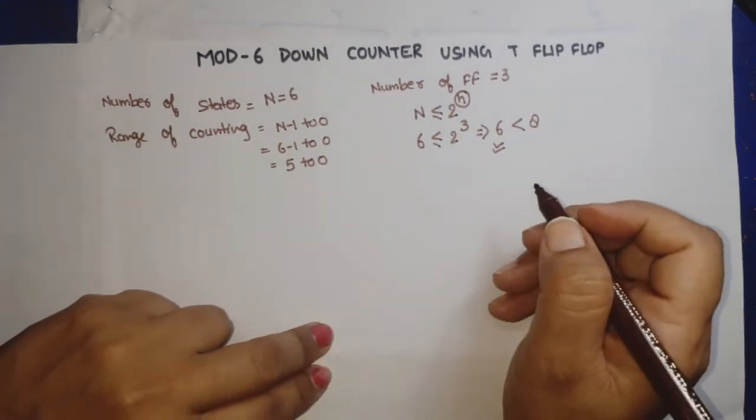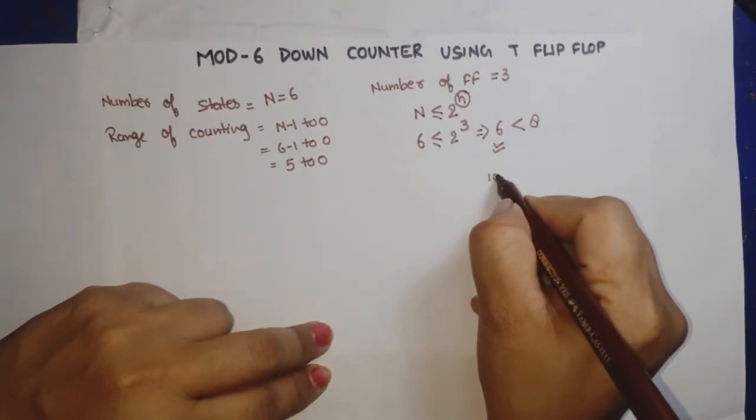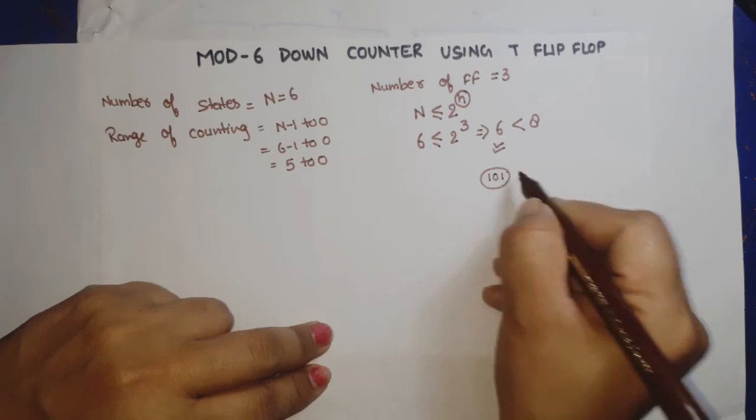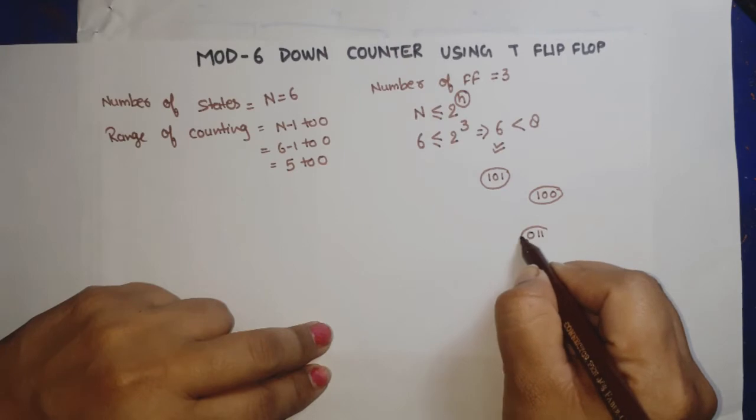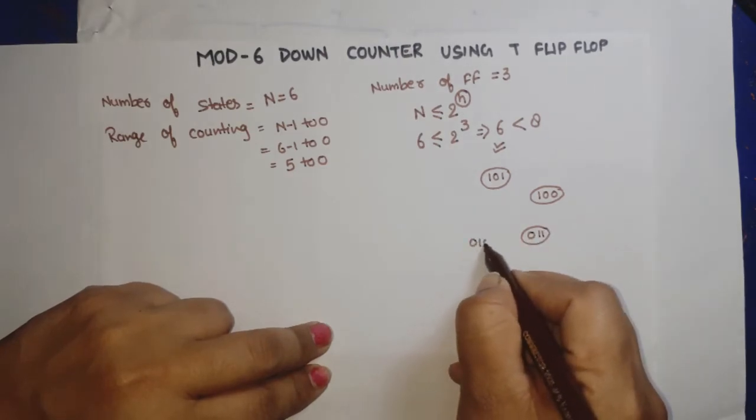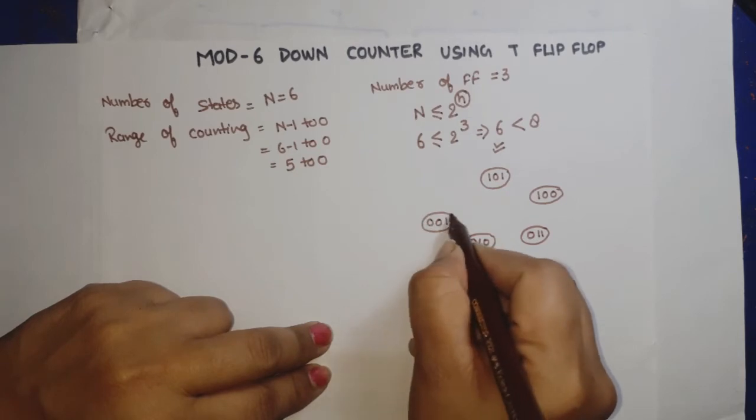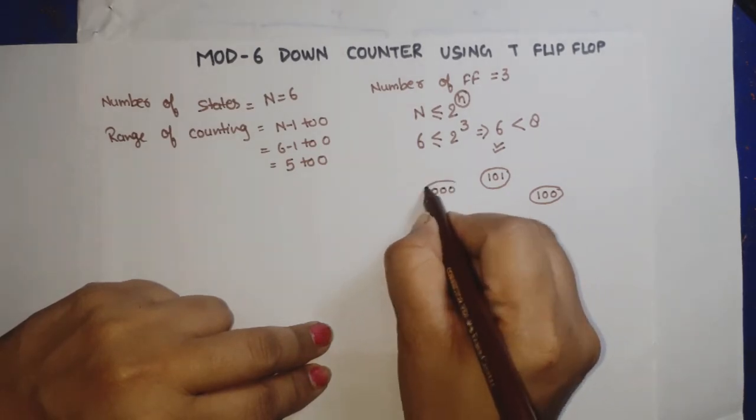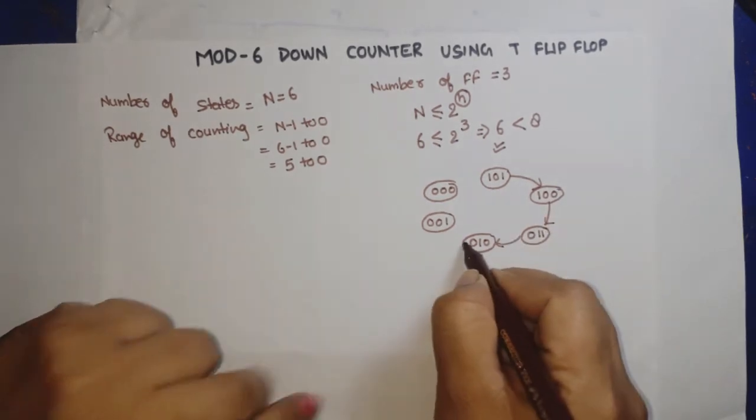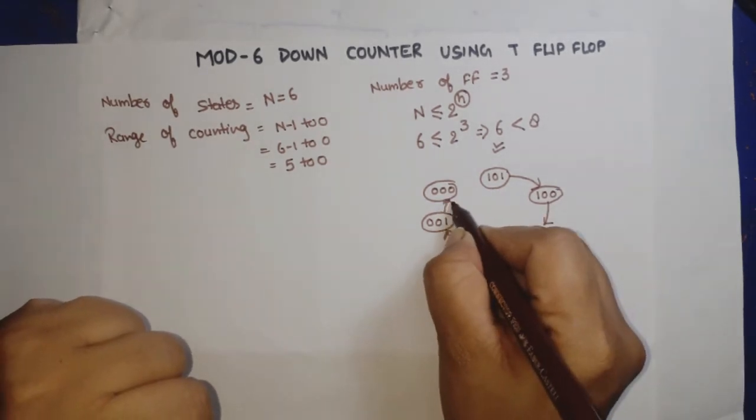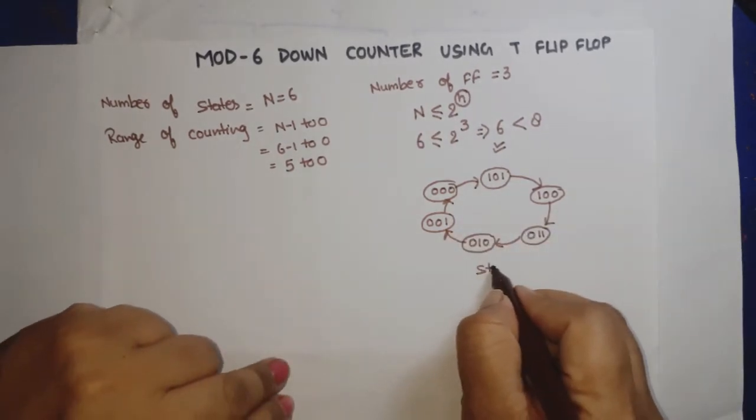Now I will make the state diagram. Number of flip-flops is 3, so counting will start from 101 (5), then 100 (4), then 011 (3), then 010 (2), then 001 (1), then 000 (0), and back to 101 (5). So this is the state diagram.